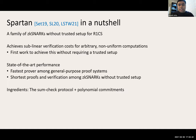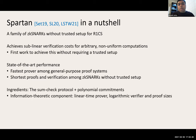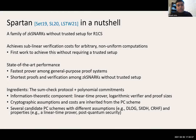The main ingredients in this construction are the sum check protocol and polynomial commitments. In particular, the information-theoretic component features a linear time prover with logarithmic verifier and proof sizes. The cryptographic assumptions for the construction are inherited directly from the polynomial commitment scheme, as well as the costs associated with the overall construction.